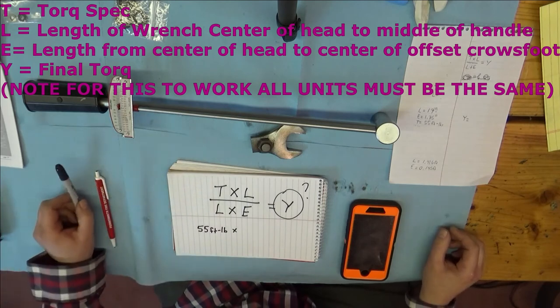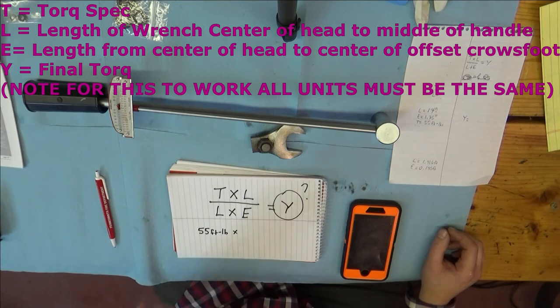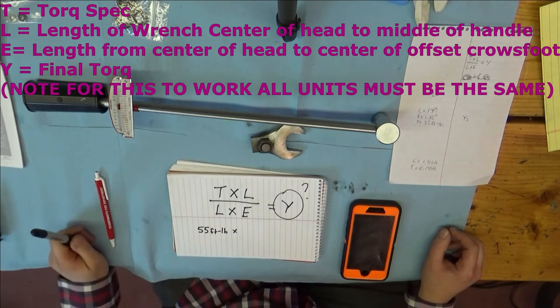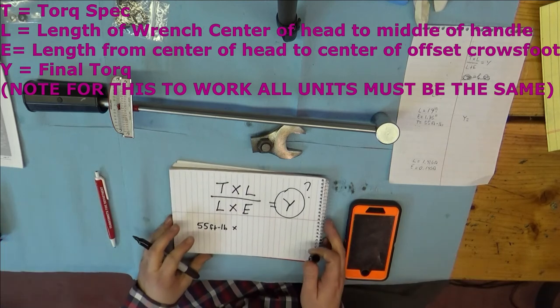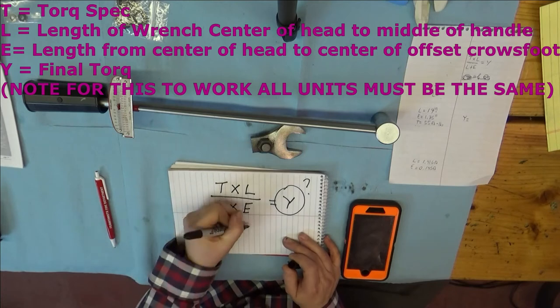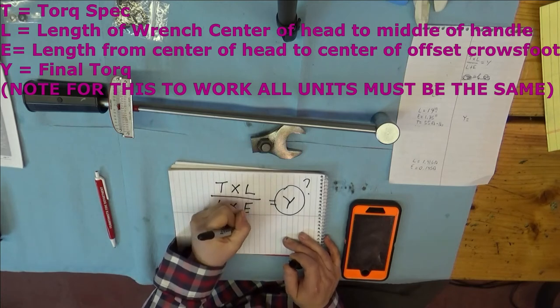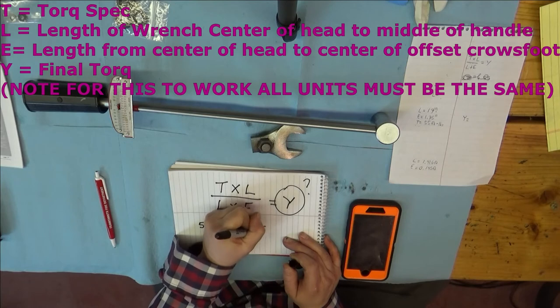Now, before you go write down 17 inches, you know this is foot pounds, right? And now you're throwing inches at it. You need to convert the 17 inches to feet. So I did that already. I'm not going to go through that conversion, but it's 1.416 feet.